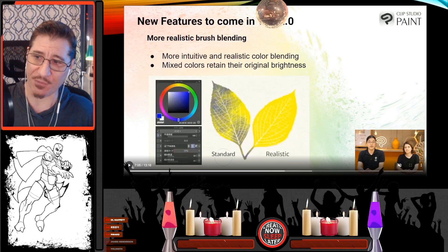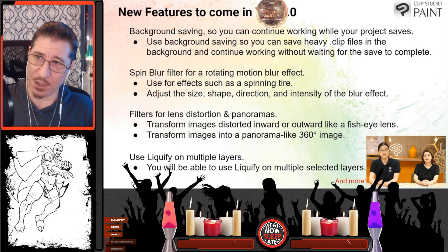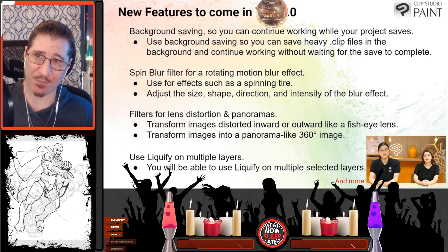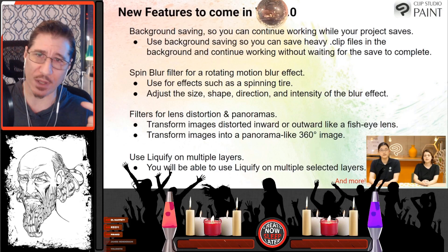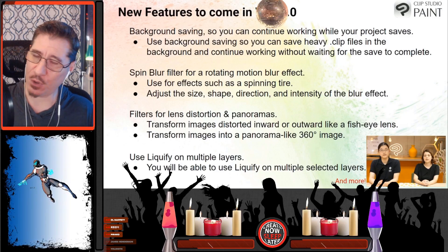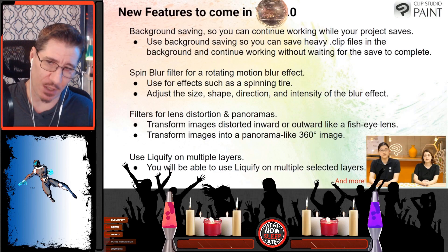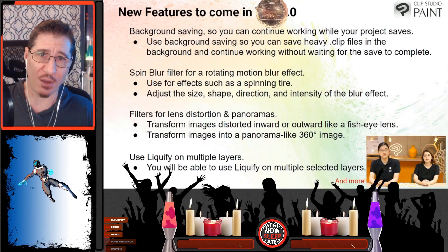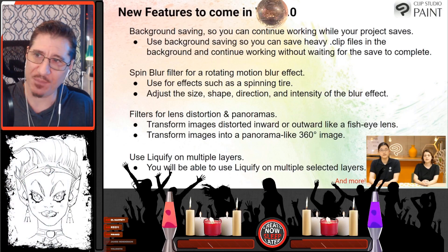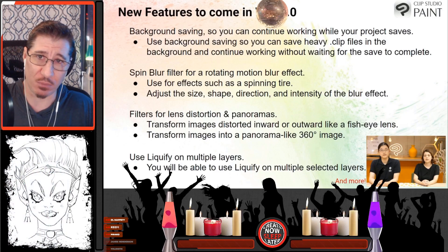There are a couple of other things on a different slide: background saving, spin blur filter, filters for lens distortion and panoramas, fish eye, and liquify multiple layers. I don't think background saving belongs in a feature update - I think they should have stability updates and feature updates, but you also need quality-of-life updates, which means common sense things. You shouldn't have to pay for background saving. Liquify multiple layers is also a quality-of-life update - you shouldn't have to pay for that either.